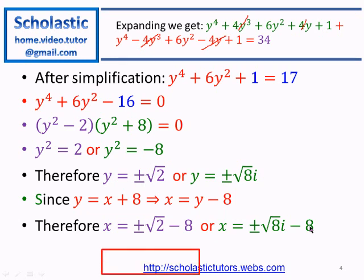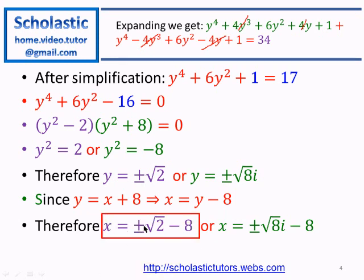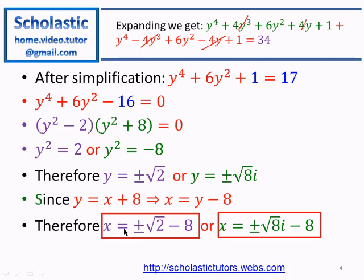These are the four roots of the given polynomial equation: x = √2 − 8, x = −√2 − 8, x = √8·i − 8, and x = −√8·i − 8. You can verify these by substituting back into the original equation to confirm the left-hand side equals 34.